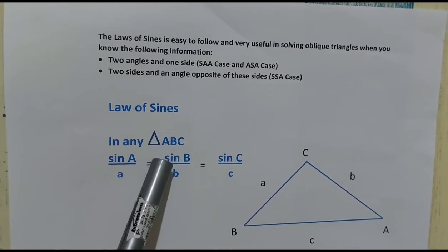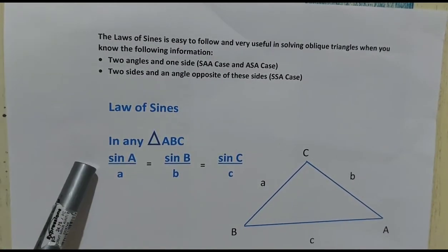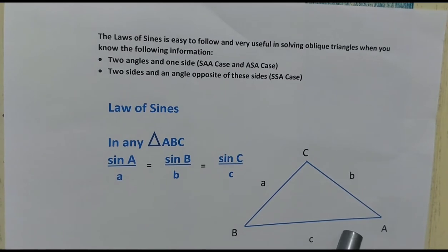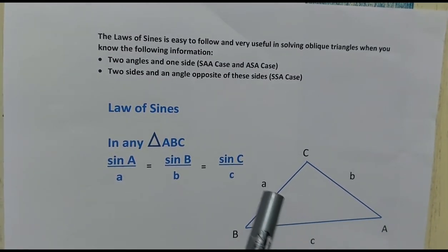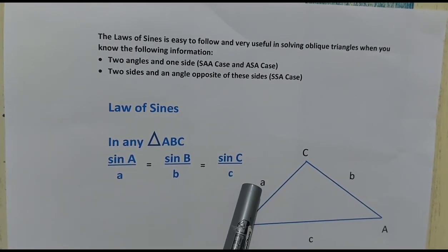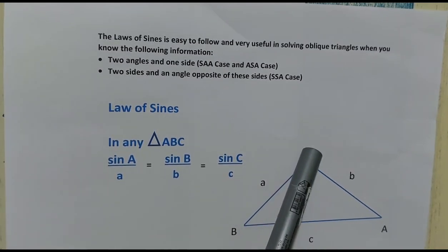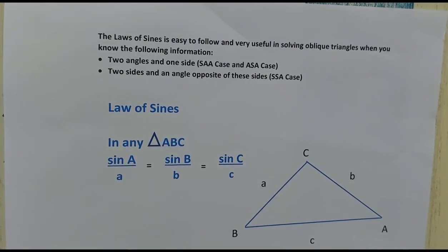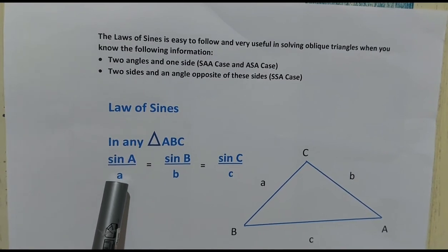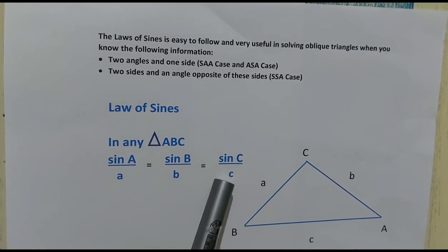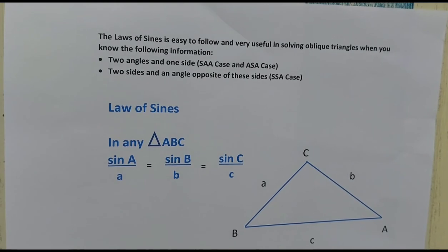The law of sines states that in any triangle ABC: sine A over side a is equal to sine B over side b, which is equal to sine C over side c. The capital letters represent the angles, and the small letters represent the opposite sides. That is the law of sines — it is easy to use, and we will have examples later.